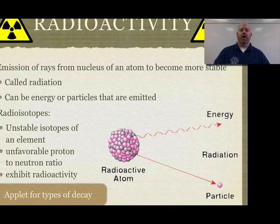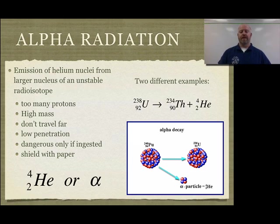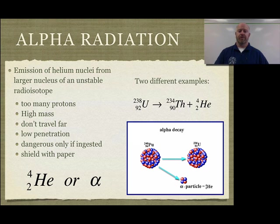If we go back to our slideshow, we see that we're going to go through the three types of radiation. In class, we're going to reinforce that with some examples and do some practice with actually calculating what changes when you do these different types of radiation. Alpha radiation is emission of a helium nuclei from a large nucleus of unstable isotope.